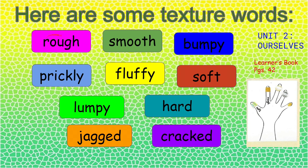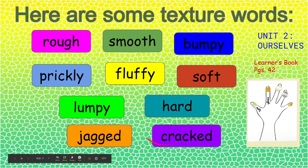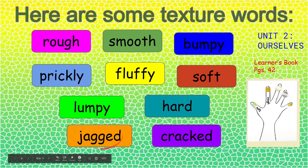For rough — this stone or rock is very rough. Smooth — anything you can think of that is smooth. Your face is very smooth, or your book or the paper is smooth. Bumpy. And use more texture words like prickly, fluffy, soft, lumpy, hard, jagged, cracked, and a lot more.